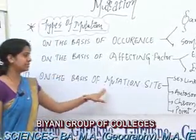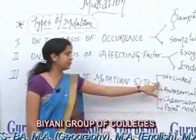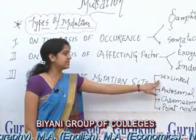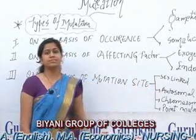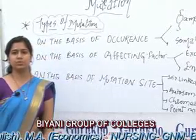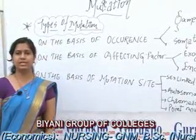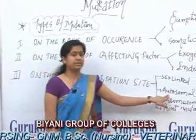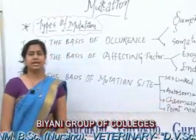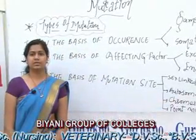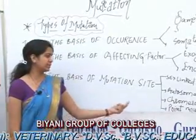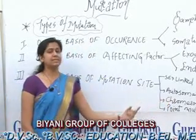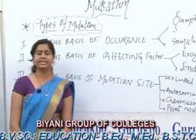Third, on the basis of mutation site, there are different types: sex-linked mutation, autosomal mutation, chromosomal mutation, and point mutation. Sex-linked mutation occurs on X or Y chromosomes; examples include hemophilia and color blindness. Autosomal mutation occurs in autosomes; example is Down syndrome in human beings. Chromosomal mutation involves changes in gene structure and chromosomes; examples include translocation, deletion, duplication, and inversion.